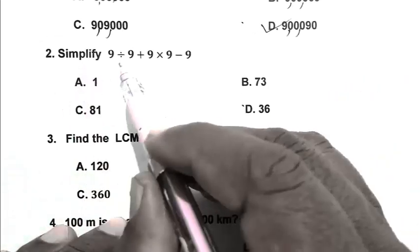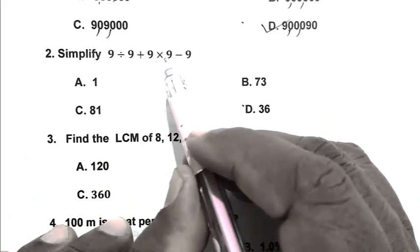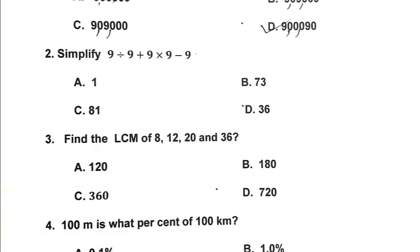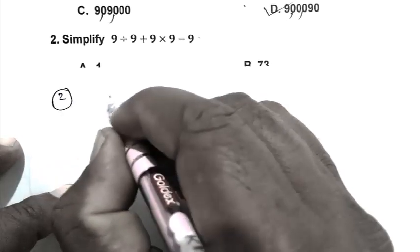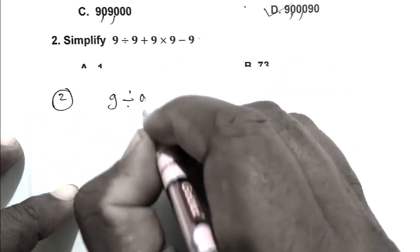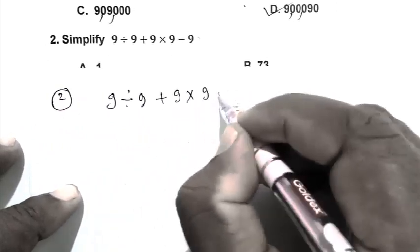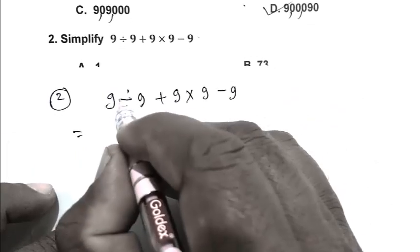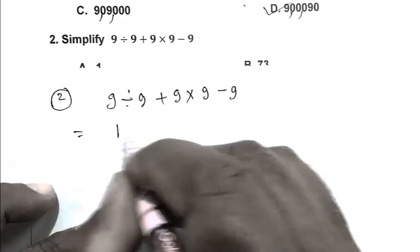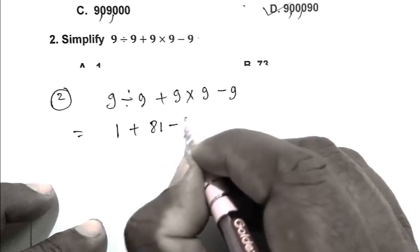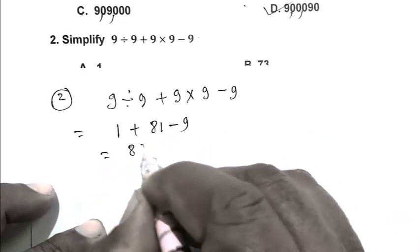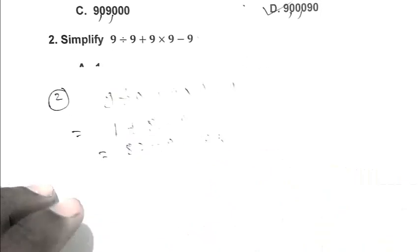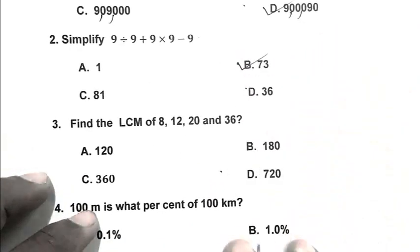Question number 2: Simplify 9 divided by 9, plus 9 multiplied by 9, minus 9. So friend, we write it as 9 divided by 9, plus 9 multiplied by 9, minus 9. This is first 1 plus 81 minus 9, that is 82 minus 9, that is 73. So friend, B is the right answer.